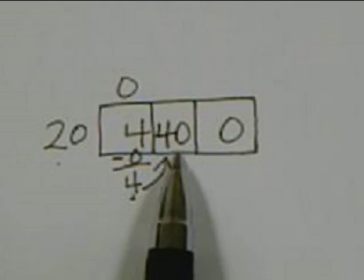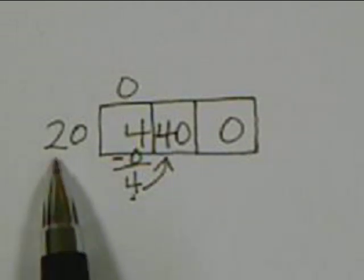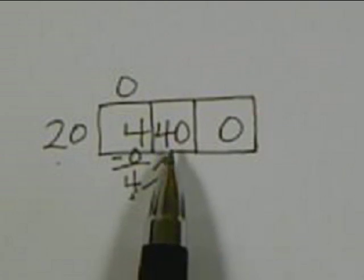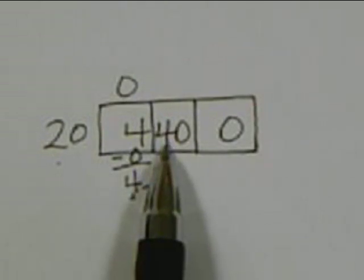So now in the next box, instead of working with zero, we're working with 40. Now, I don't want students to write their multiplication facts because they can count by 20s: 20, 40, 60, 80, 100, etc. So they want to figure out what times 20 is going to get them the closest to 40 without going over.